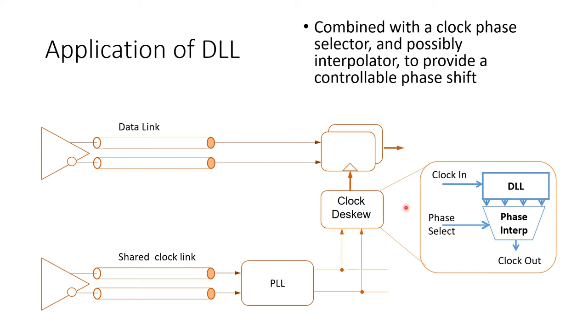We know that a DLL can accept as its input this clock and produce many phase shifted copies of that clock spread across the full clock period. What's then left is for some control circuitry to decide which of these uniformly spaced clocks is best suited to sample the incoming data.